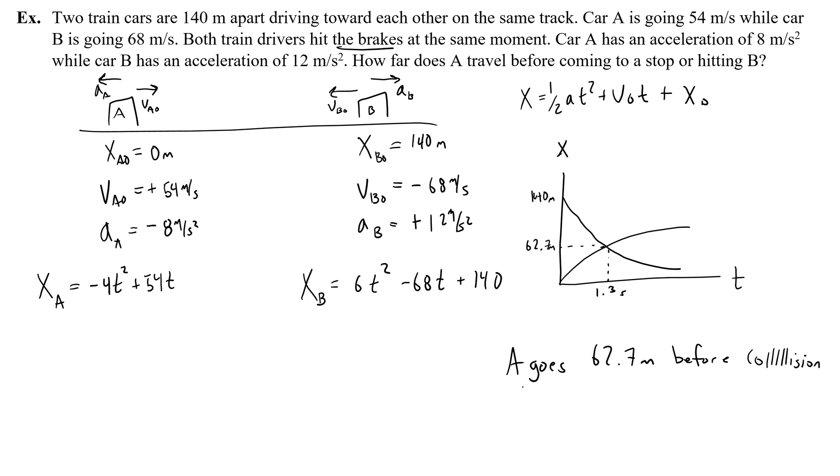Alternatively, if you did not want to graph this to solve it, you could set these two equations equal to each other, negative 4t squared plus 54t equals 6t squared minus 68t plus 140. Okay. So you could set those two equations equal to each other and then solve for time. Now, the problem is that if you try to solve for t in this equation, you are going to have a quadratic, which means you would need to use the quadratic formula to actually get an answer for the time value. And the second answer that you get out of that quadratic formula would actually be later on when these two would collide again.